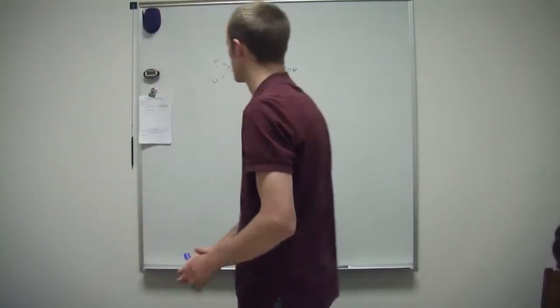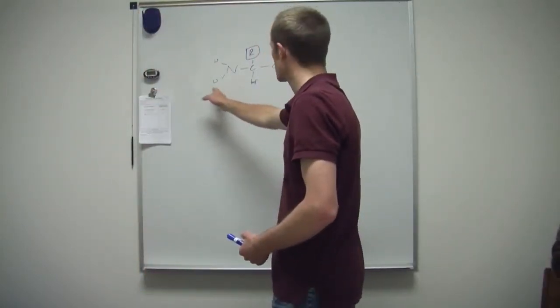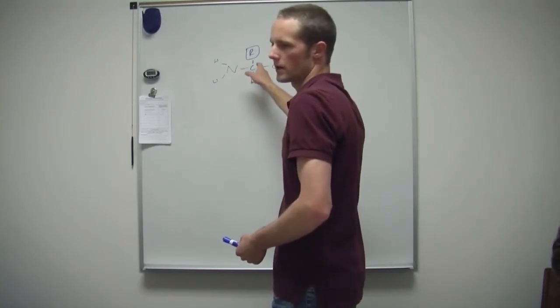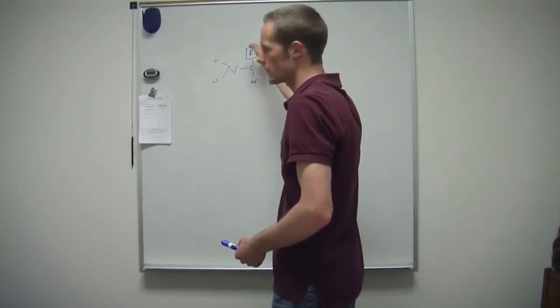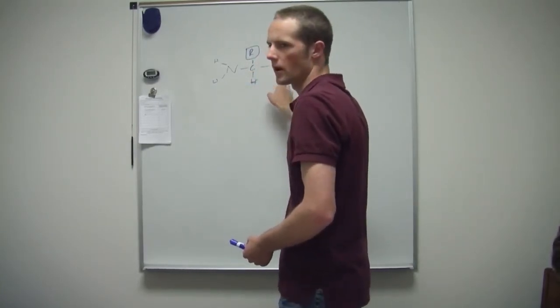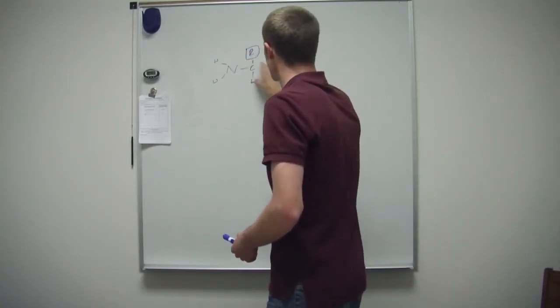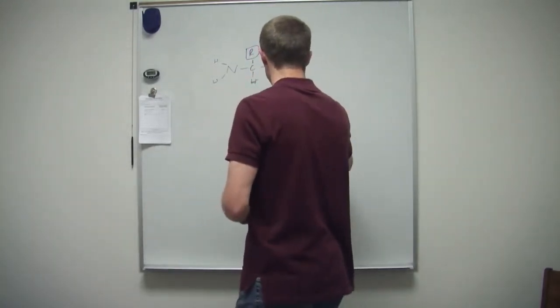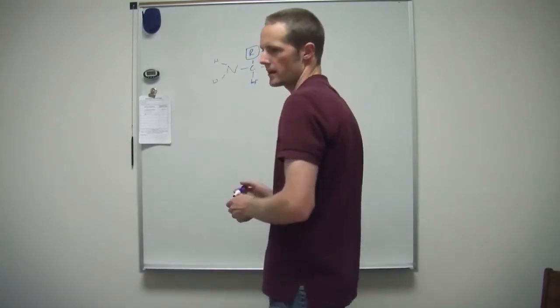So you see the basic structure here with the amino group. Then you have the carbon that has the R group. Okay. Then you have the carbonyl carbon. So those are the, kind of the, that's the, if you look at just the basic structure of an amino acid, it looks like that. Okay.